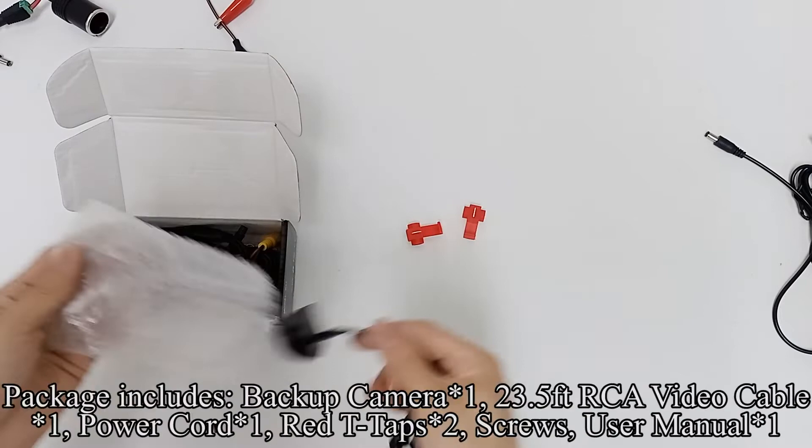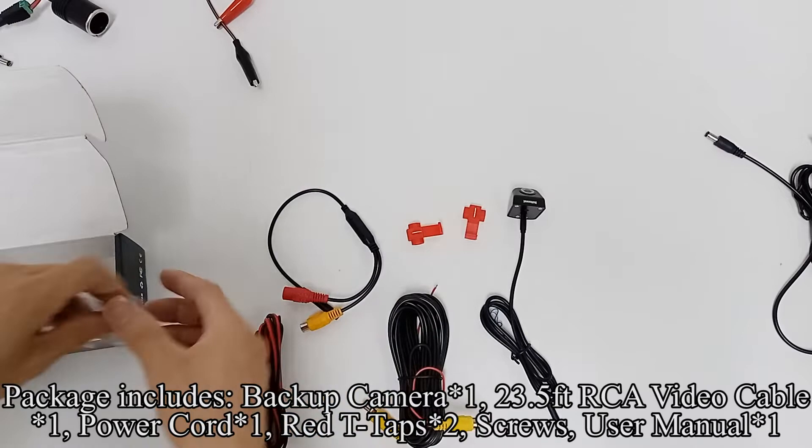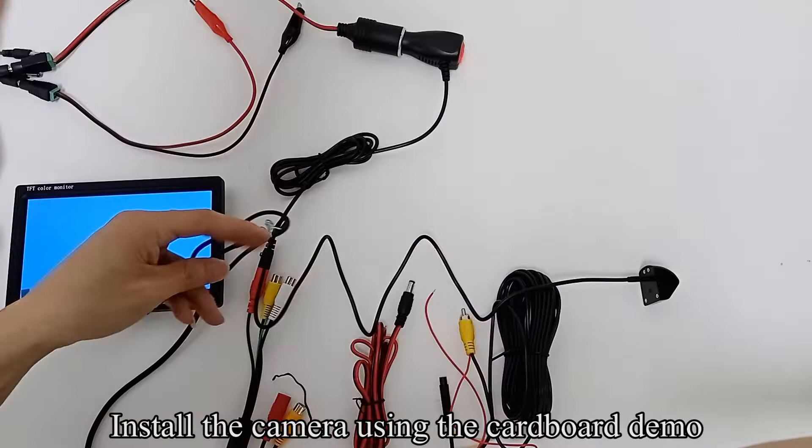First, take all items out of the package. The package includes a backup camera, 23.5 feet RCA video cable, power cord, red T-Taps, screws, and a user manual.